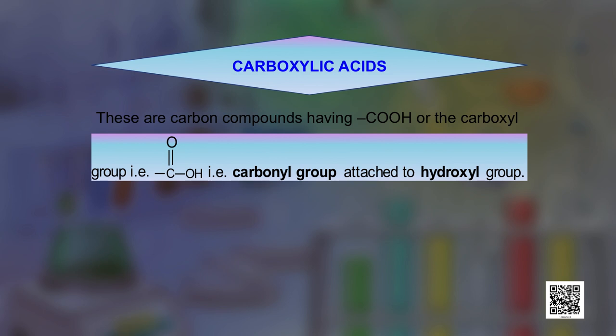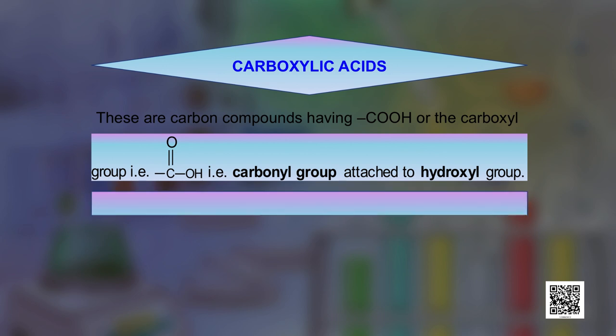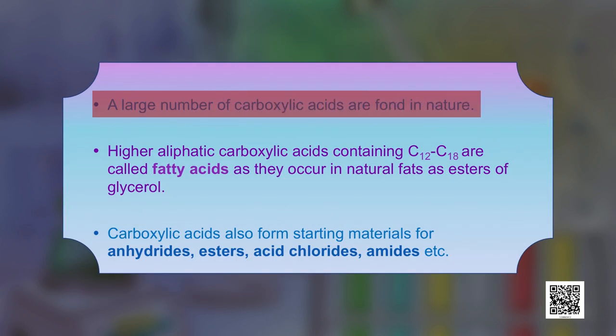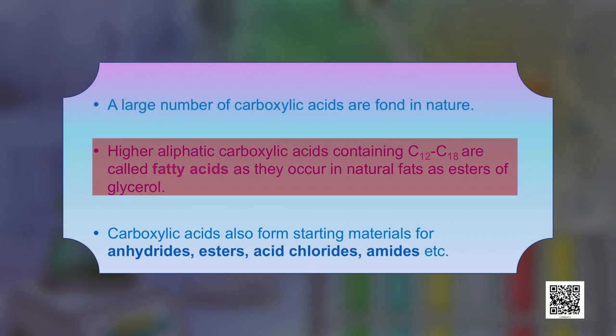Carboxylic acids are carbon compounds having a COOH, or carboxyl group, in their structure. Depending upon the group attached to the COOH group — that is, if the group is alkyl or aryl — the carboxylic acids are called aliphatic carboxylic acids or aromatic carboxylic acids, represented as RCOOH or ArCOOH respectively. A large number of carboxylic acids are found in nature. Higher carboxylic acids which are aliphatic and contain C12 to C16 carbon atoms are called fatty acids, because they occur in natural fats as esters of glycerol.